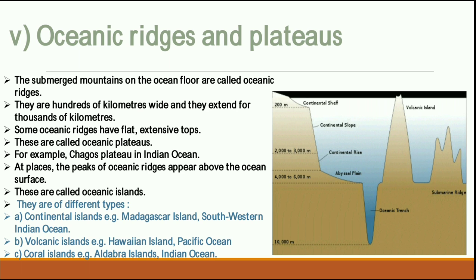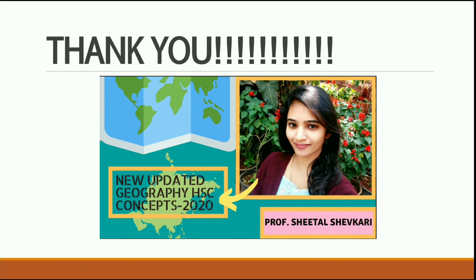Islands are classified into three types: continental islands (e.g., Madagascar in the southwestern Indian Ocean), volcanic islands (e.g., Hawaii in the Pacific Ocean), and coral islands (e.g., Aldabra Islands in the Indian Ocean). Continental islands are close to continents, volcanic islands are created by volcanic eruptions, and coral islands are formed by large accumulations of deposited material.